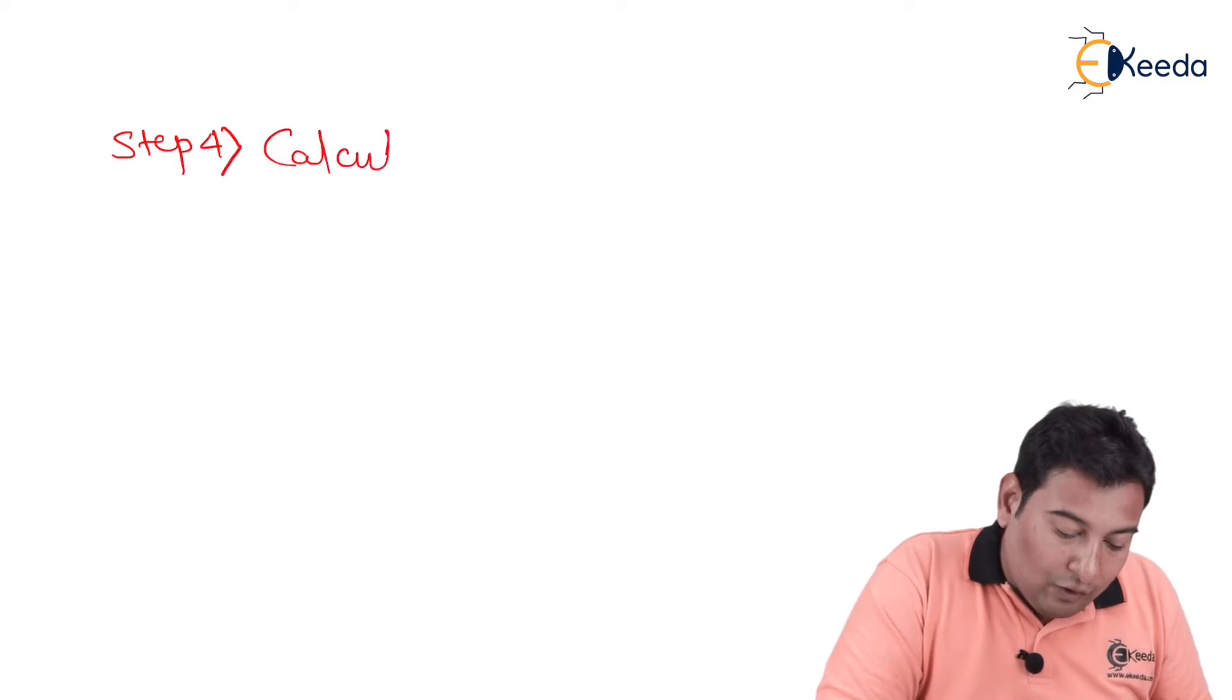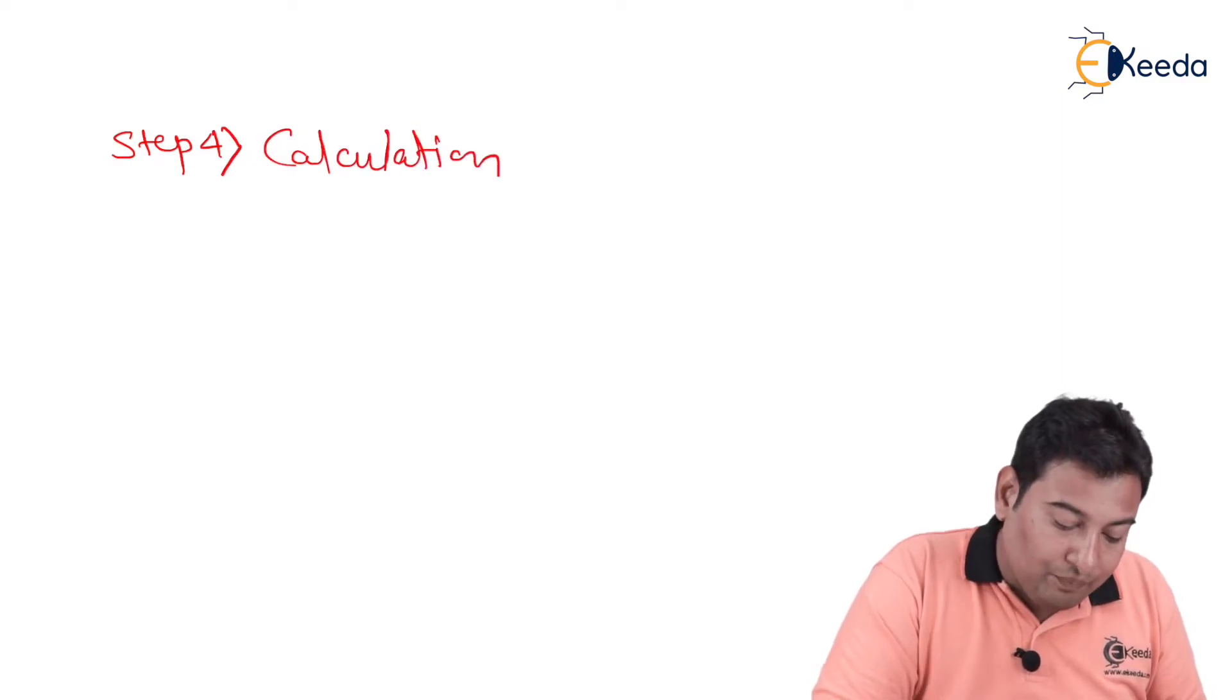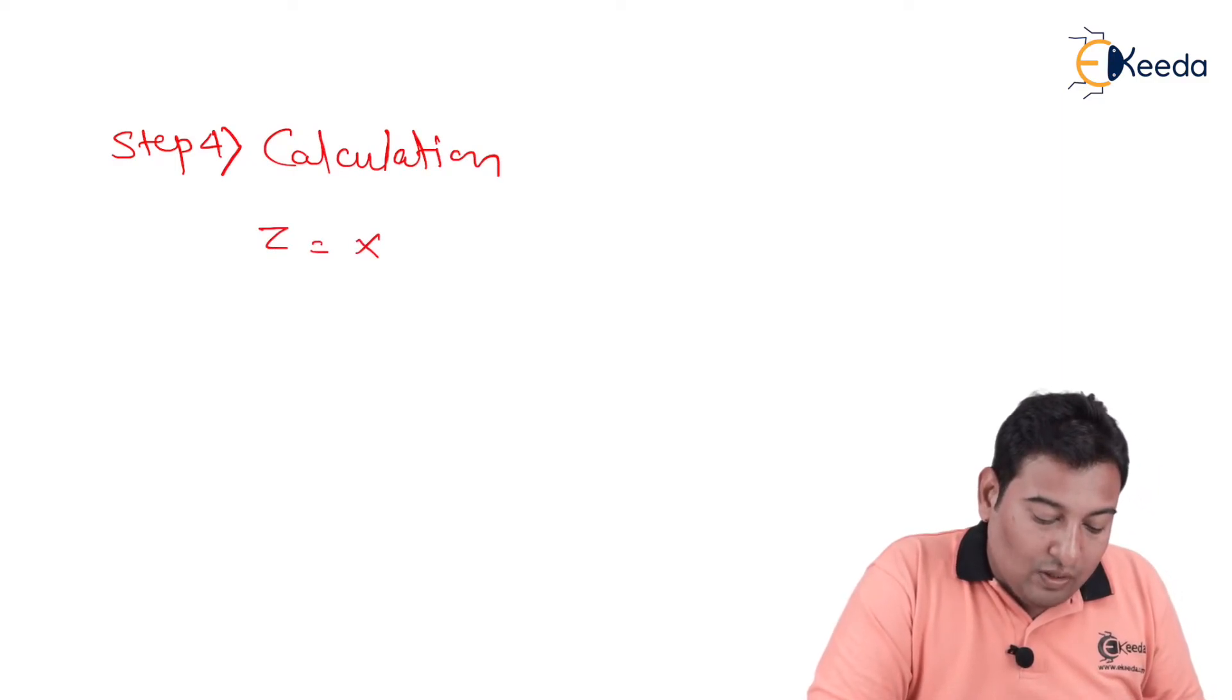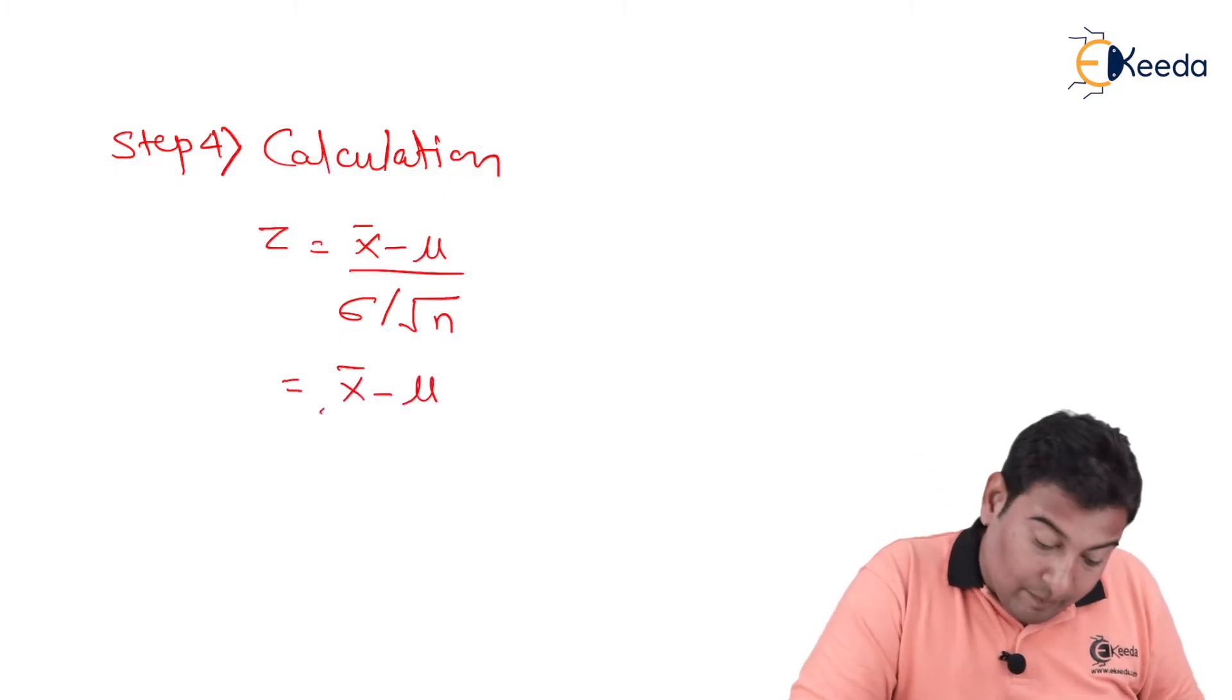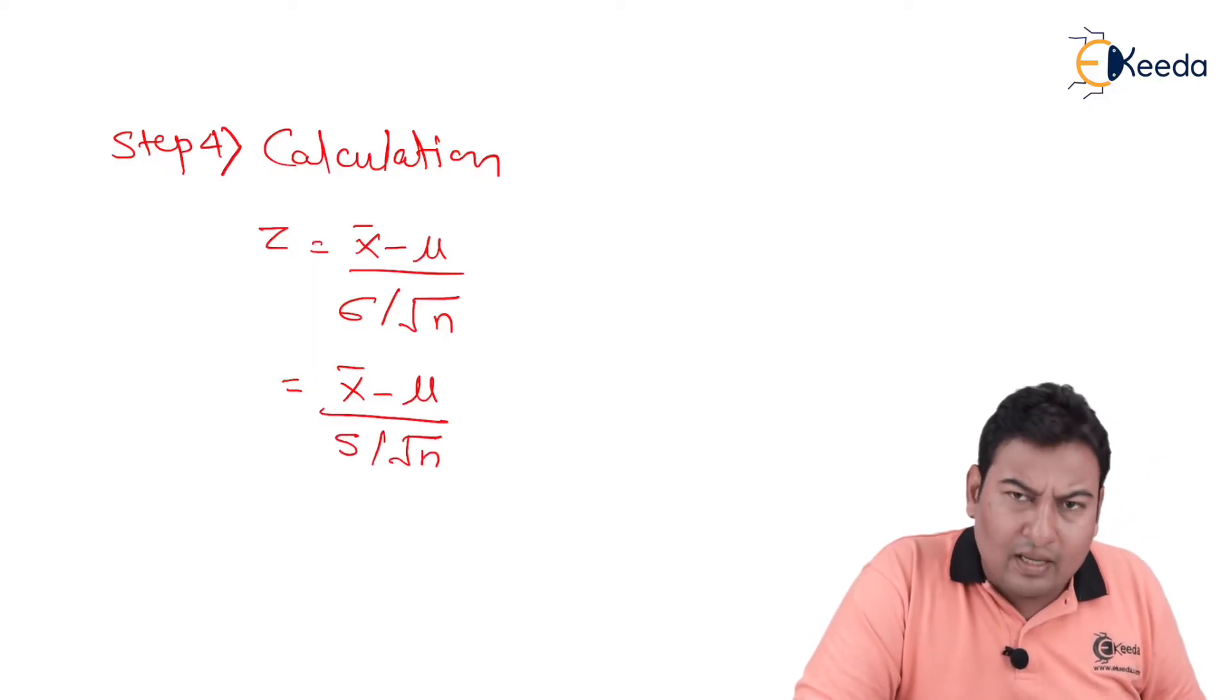Let's move on to step number 4, your calculation part. And for calculation, we have formula. Z is equal to x̄ minus μ upon σ by root n. And as we have already discussed, in case of large sample test, only large sample test, this σ can be replaced by S whenever required.